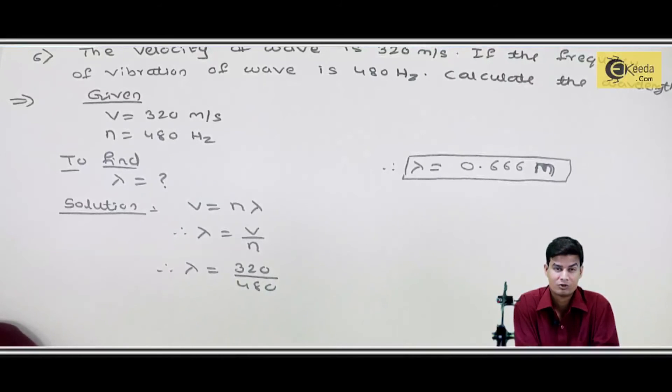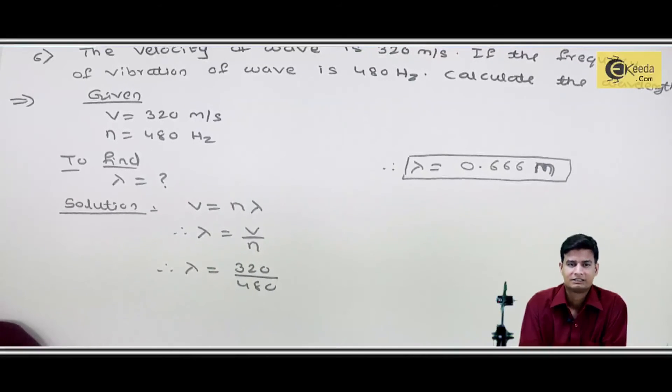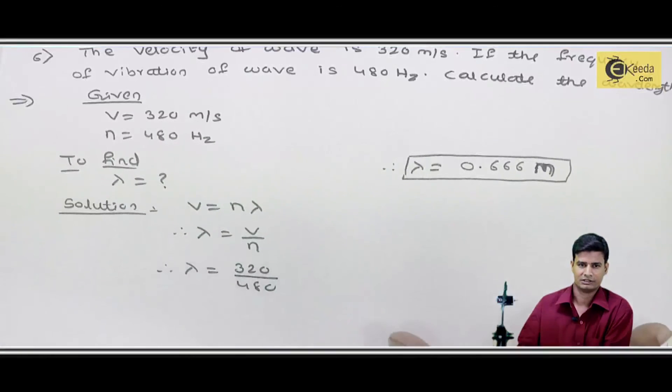तो V equals to N lambda formula use करके, मैंने lambda की form में arrange किया, and then value put किया, और इसके बाद value substitute करके, calculator से answer find out किया. तो मुझे final answer मिला 0.666 meter, और 0.67 meter हम directly बोल सकते हैं.